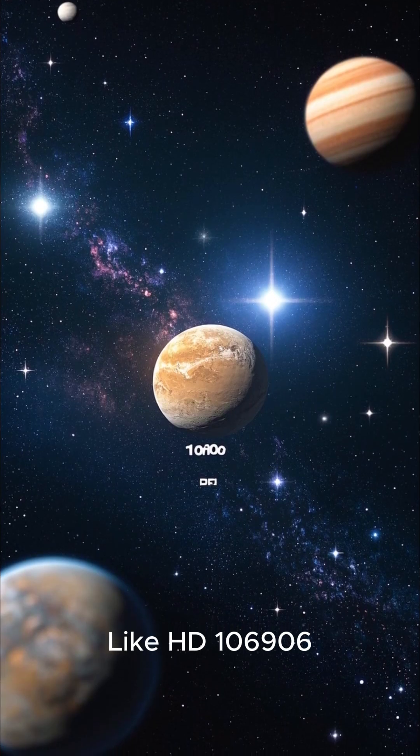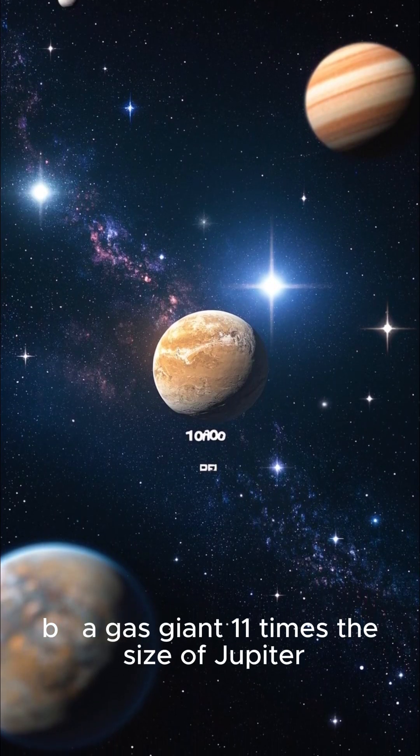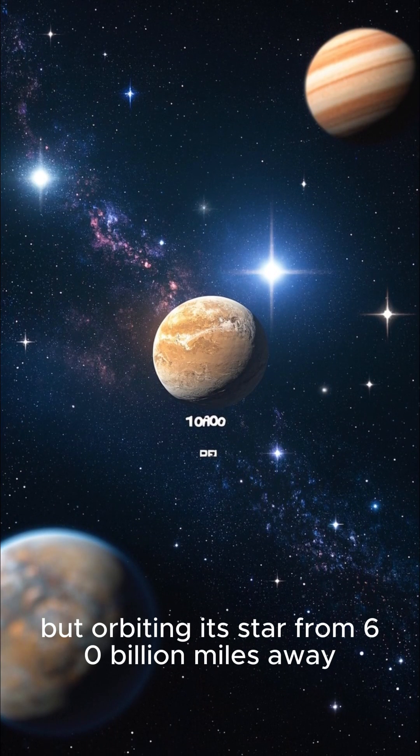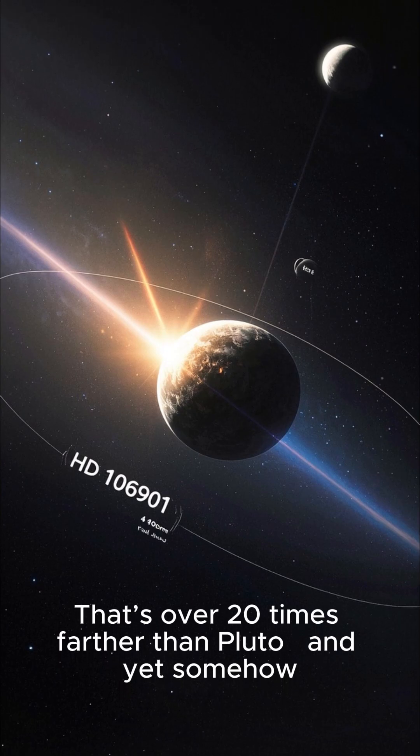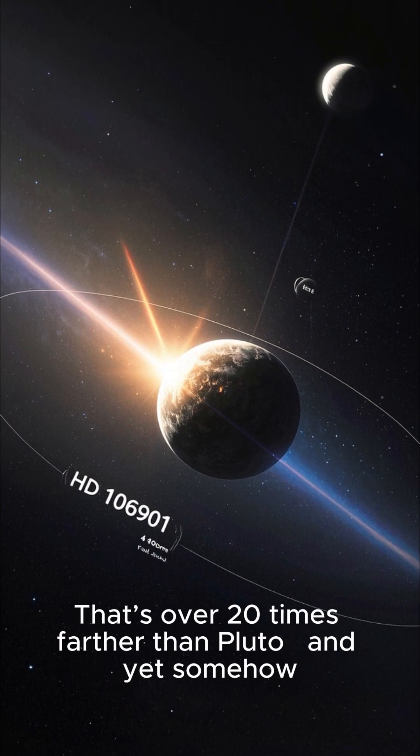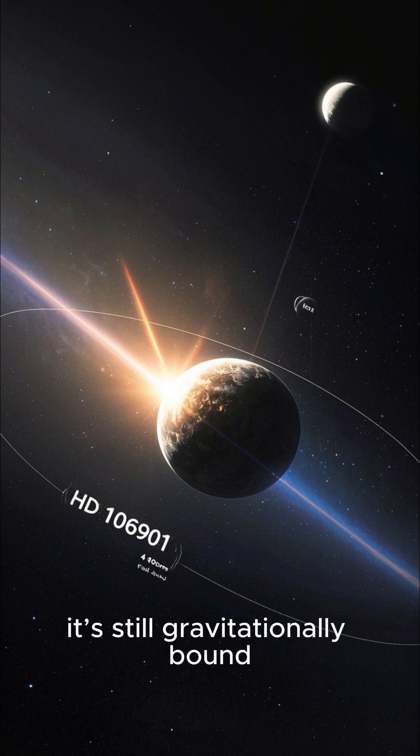Like HD 16906b. A gas giant 11 times the size of Jupiter, orbiting its star from 60 billion miles away. That's over 20 times farther than Pluto, and yet somehow, it's still gravitationally bound.